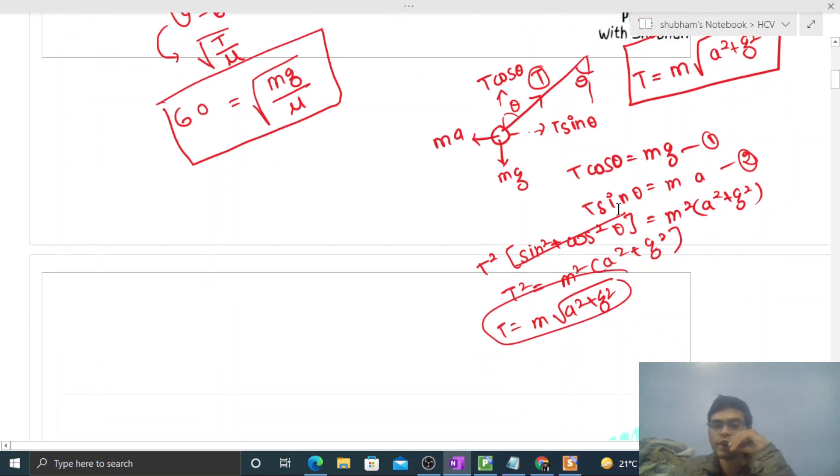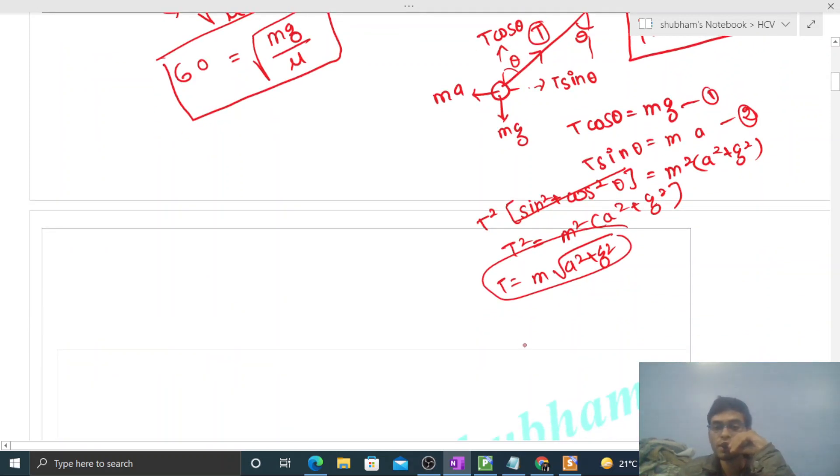Anyway, so in second case the tension is this. So the wave speed will be under root of tension. Tension will be m and you can see a square plus g square. This is the tension in root and divided by mu. That is equal to 62. So this is our equation 2.